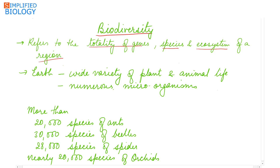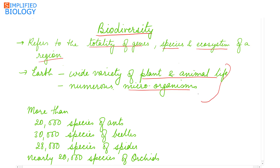Earth has a wide variety of plant and animal life and even numerous microorganisms. These microorganisms are not visible to the naked eye. The occurrence of different kinds of organisms reflects the biological diversity.